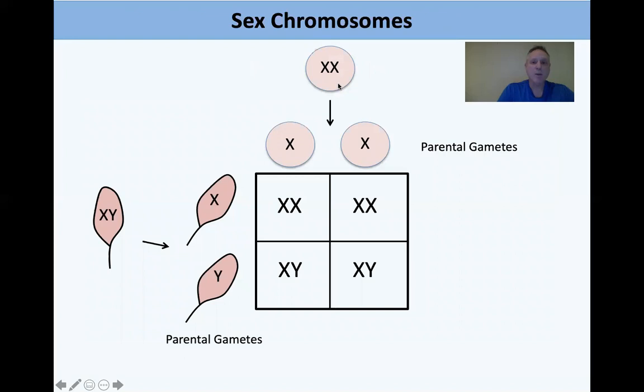Sex chromosomes follow the same probability principles. Taking XX gametes from the female and XY from the male, when you cross them you can see that the probability of being male or female is 1:1.